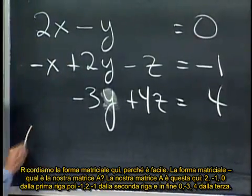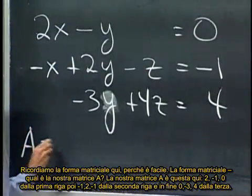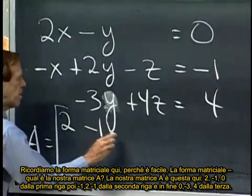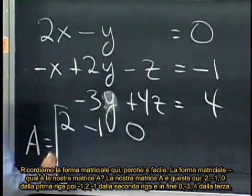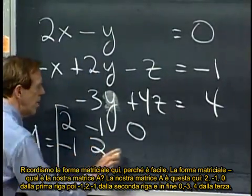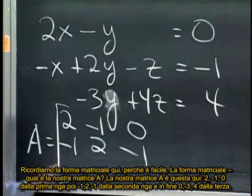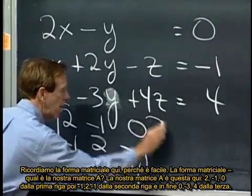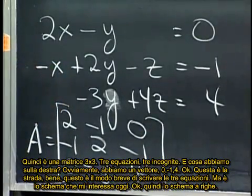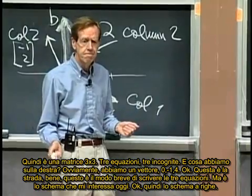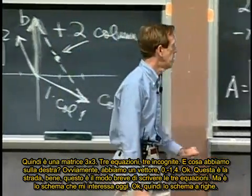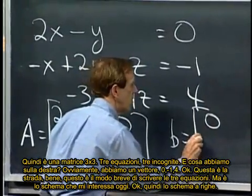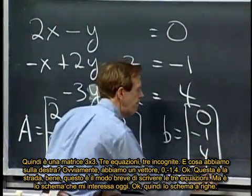The matrix form, what's our matrix A? Our matrix A is the two and the minus one and the zero from the first row, the minus one and the two and the minus one from the second row, the zero, the minus three, and the four from the third row. So it's a three by three matrix. Three equations, three unknowns. And what's our right-hand side? Of course it's the vector zero, minus one, four.